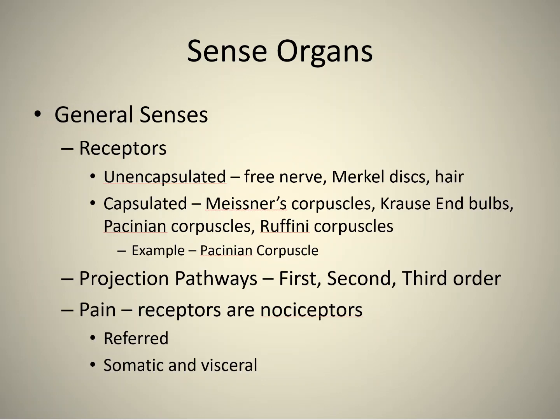Slide nine covers the general senses. There are lots of different receptor types, and we put them into two categories: non-encapsulated receptors and encapsulated receptors. This is all for touch, light pressure, and hard pressure. I'll give you an example later of one called the Pacinian corpuscle, but you won't need to know how all the others work — there are two general types of touch receptors.